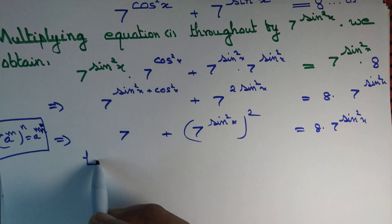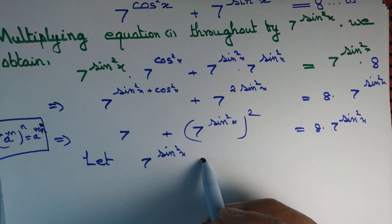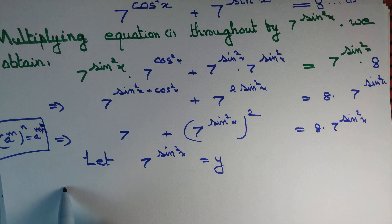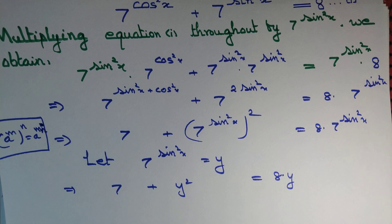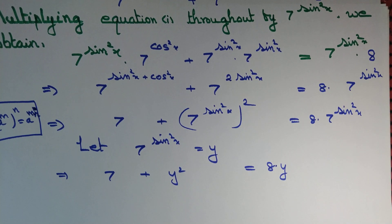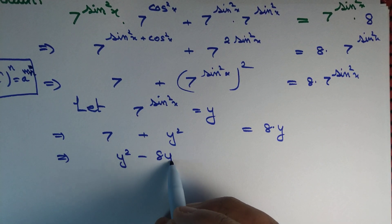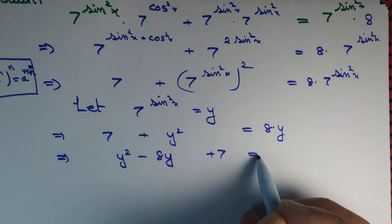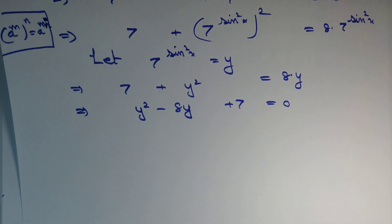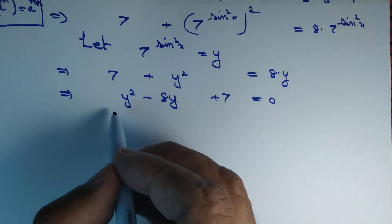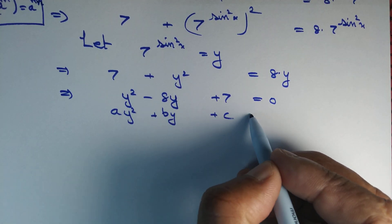Let 7 to the power sine squared x be equal to y. That gives us 7 + y² equals 8y. Rearranging everything to the left-hand side, we obtain y² minus 8y plus 7 equals 0. This is a quadratic equation in y and we can definitely solve it.